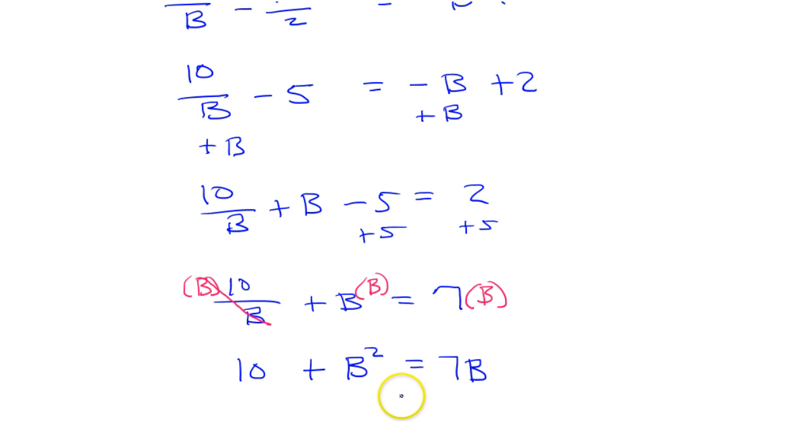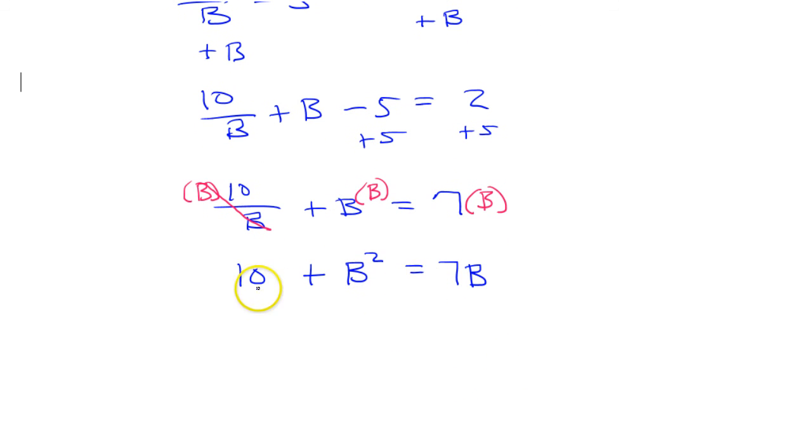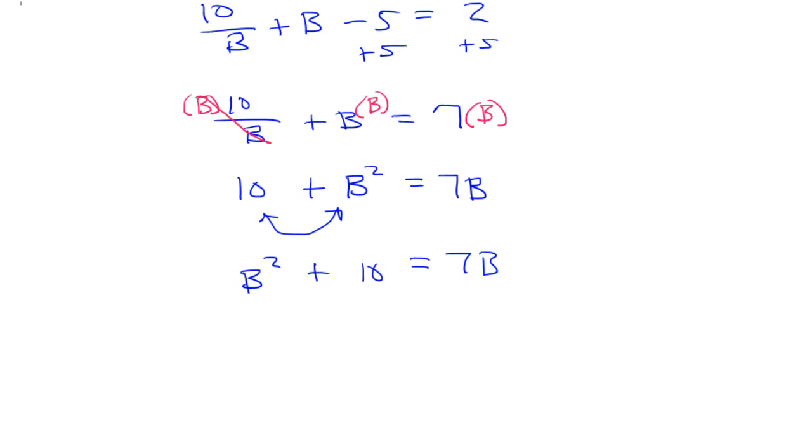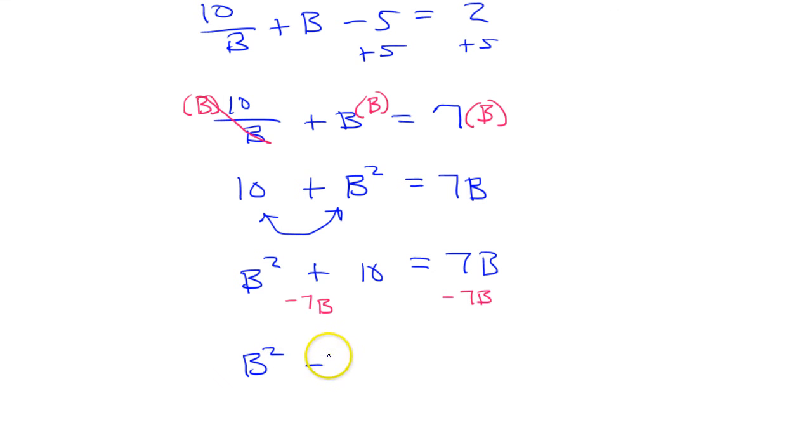Now I see I've got this quadratic forming, this quadratic equation. It's b squared. So I'm thinking I'm going to try to either factor this or use the quadratic formula. Either way, it's looking like I'm going to need 0 on one side. So I'm going to go ahead and put this in standard form. So first of all, I could switch these around. Addition is commutative. So I could write this as b squared plus 10 is equal to 7b. And now I will subtract 7b from both sides. So I'm going to have b squared minus 7b plus 10 is equal to 0.